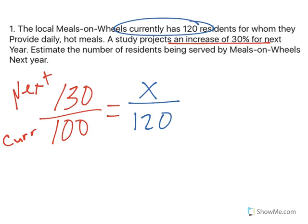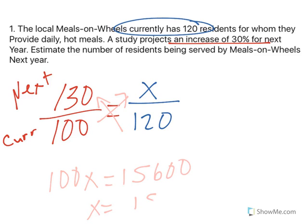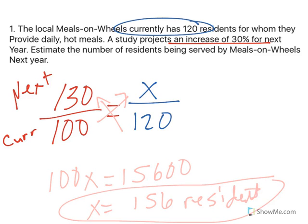So I have myself a nice proportion. I cross multiply: 100X equals 15,600. I divide both sides by 100 and I end up with 156 residents for next year. This is an estimate.